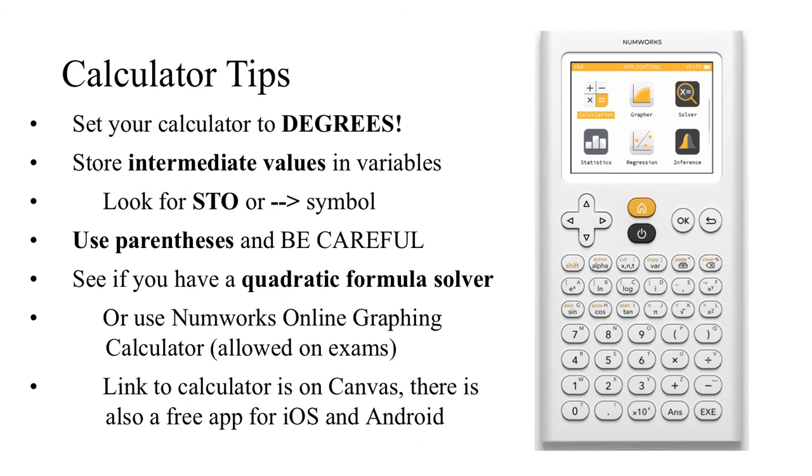Just a quick word before you begin solving these problems. It's really important to be very comfortable with your calculator in this class, especially beginning now. Please make sure your calculator is set to degrees mode, always. Get it out of radians if it's in radians. It helps to store intermediate values. By intermediate values, I mean anything you're going to use to do a calculation again later in variables in your calculator. You can look for the STO or arrow symbol to do this. And if you've got a question about this, you can always come talk to me and I can help you with that.